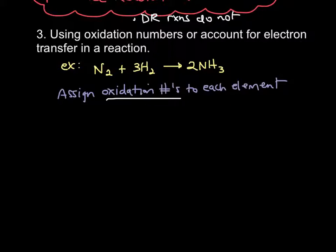An oxidation number is also called an oxidation state — you might hear me use those two terms interchangeably. It's really just a way to account for where the electrons are: which elements have electrons, how many do they have surrounding them — and remember, we're only really concerned with valence electrons — and then during the course of the reaction, where did those electrons go? This is the best way to determine whether or not a reaction is redox.